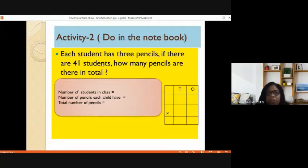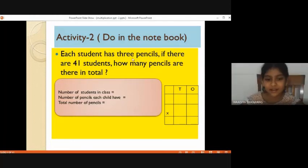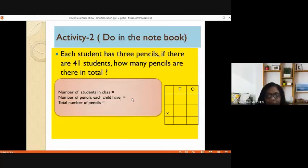That is, each student has 3 pencils. If there are 41 students, how many pencils are there in total? The first step, number of students in class. How many students are there? You need to write. Number of pencils each child has. How many pencils each child has? 3. 3. So, 3 you need to write here.